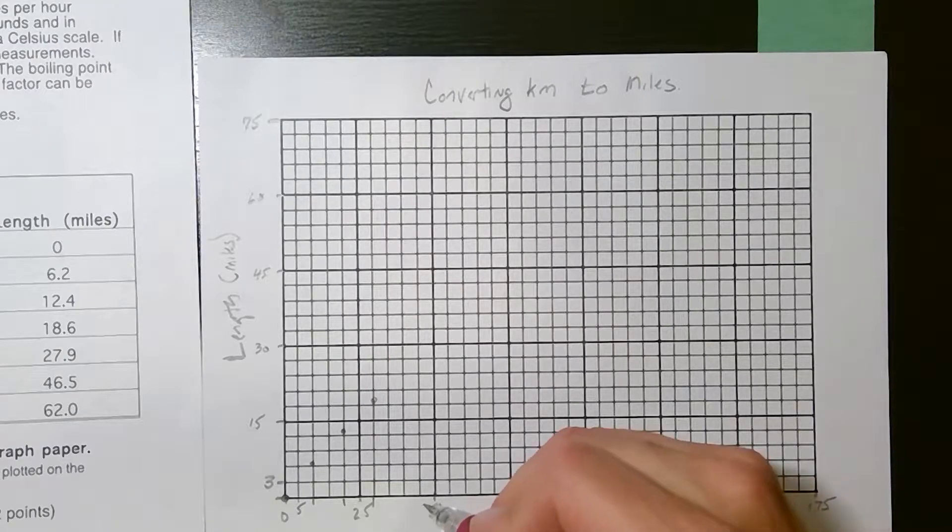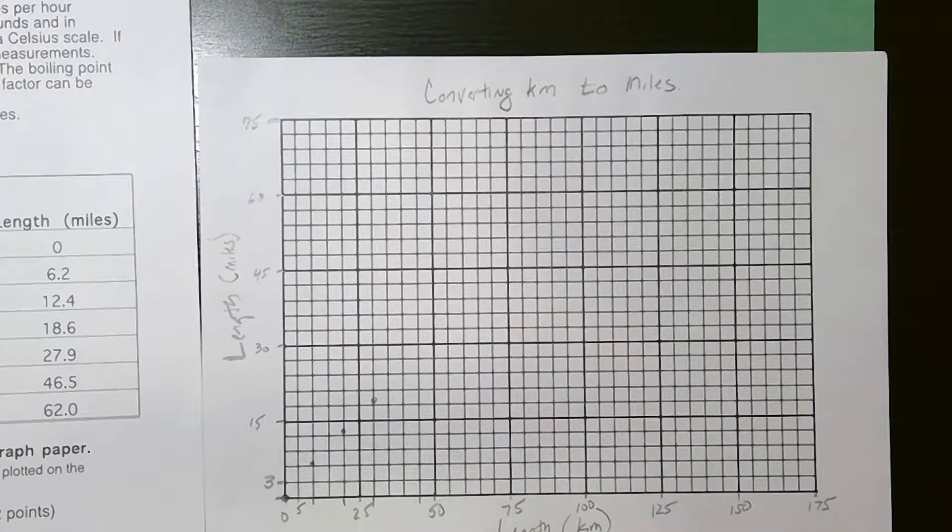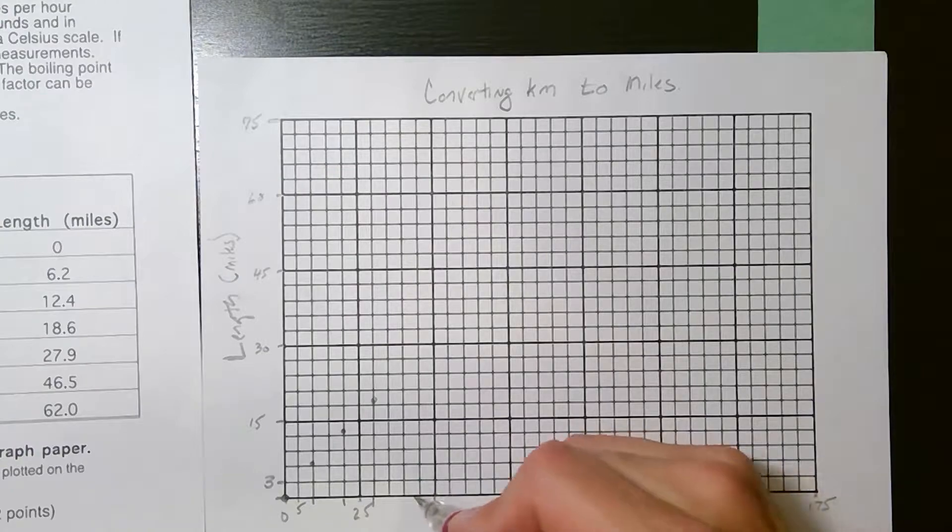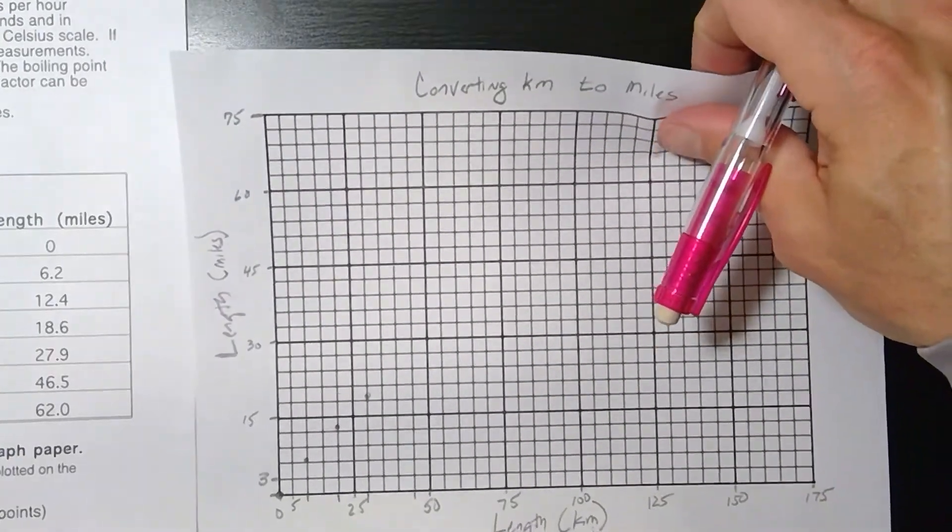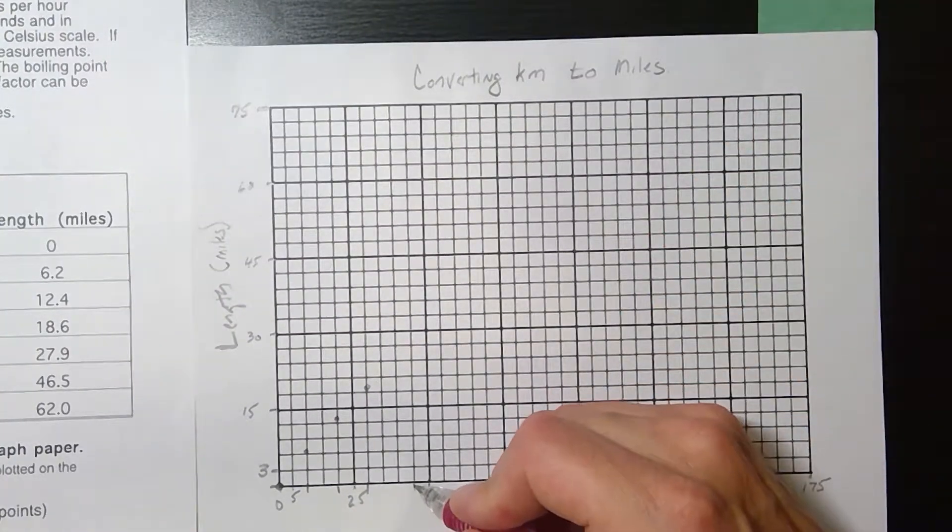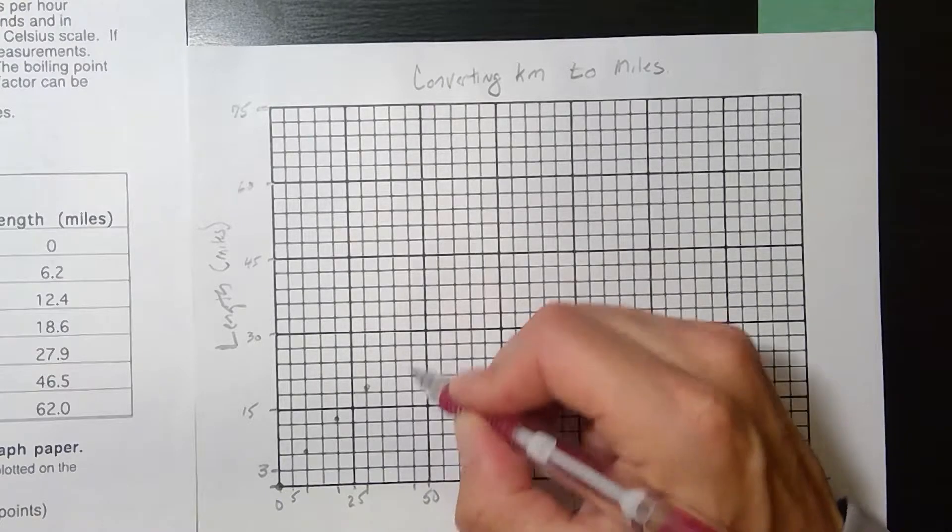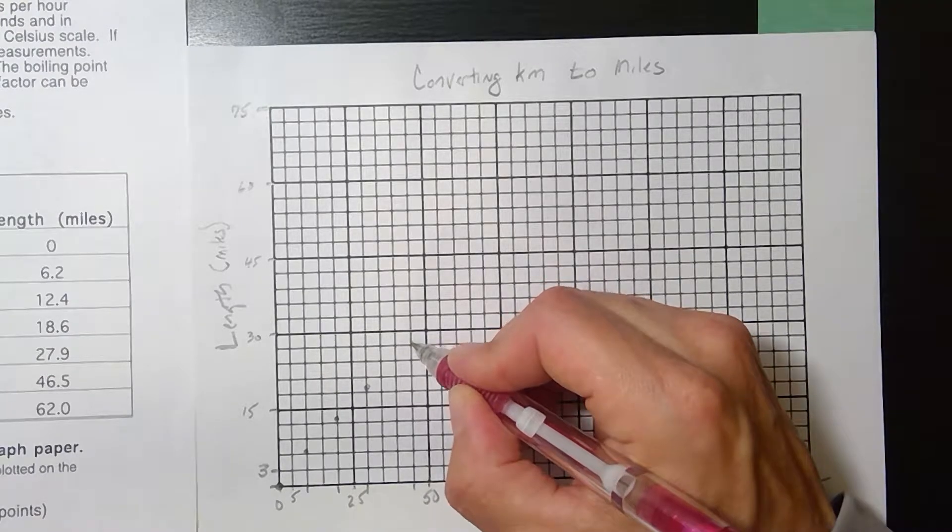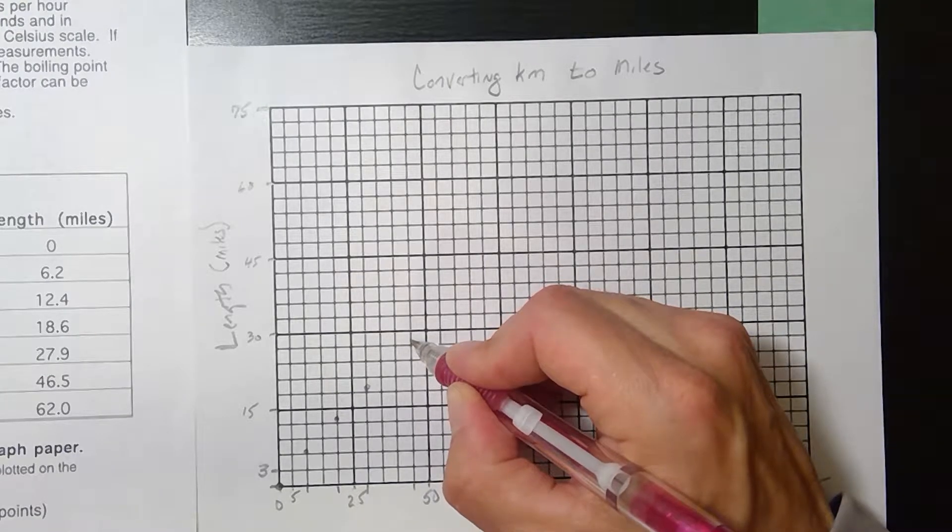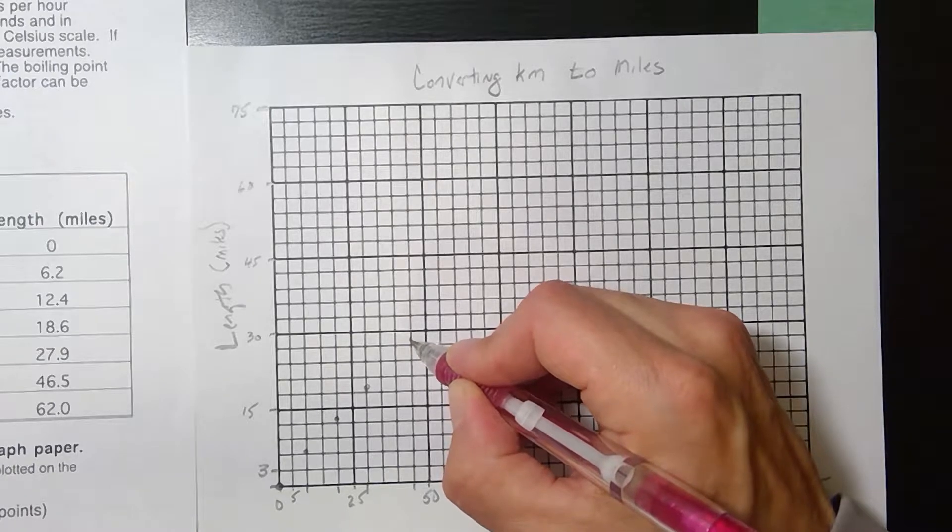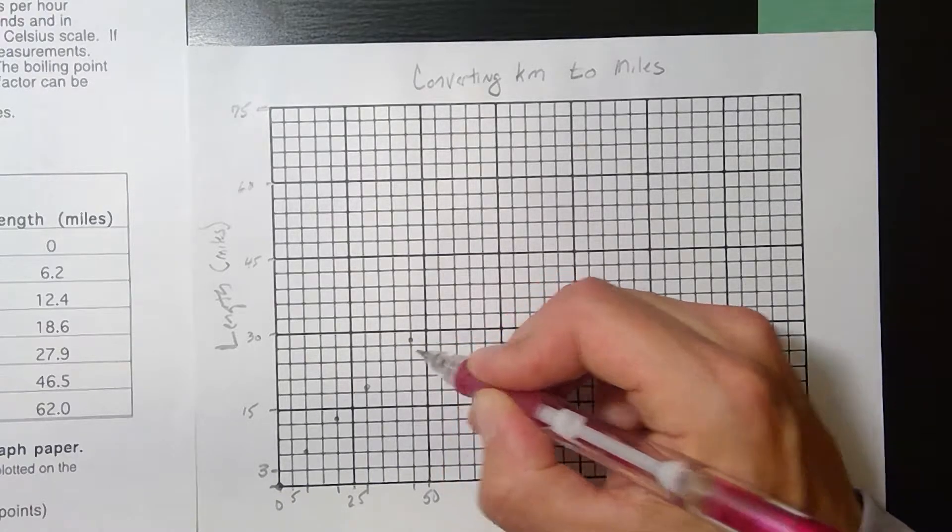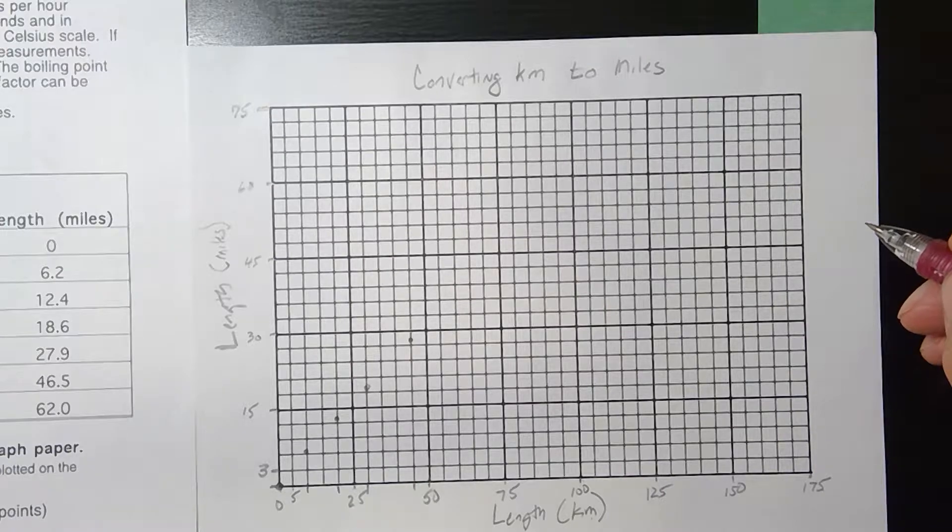45. It's nice that we went by 5's because every line, every point is going to be right on a mark. So 45 is one line prior to 50. 27.9. So 30 minus 3 would be 27, 27.9 would be just about a third of the way up. That was for 45.